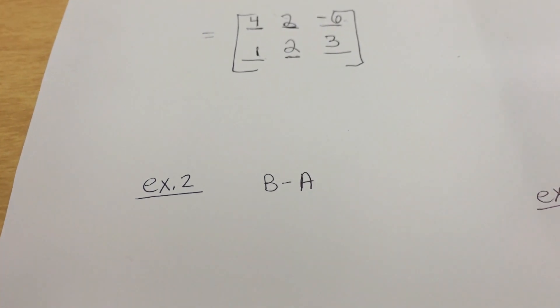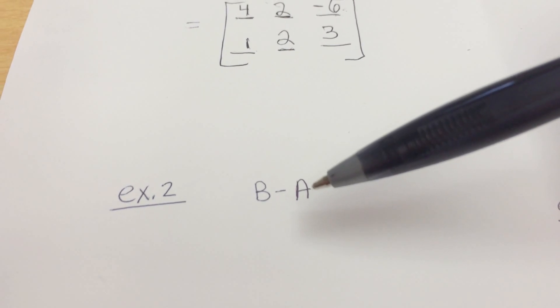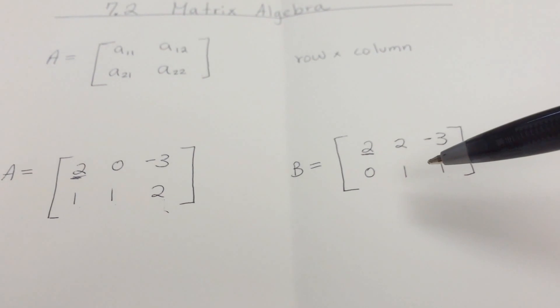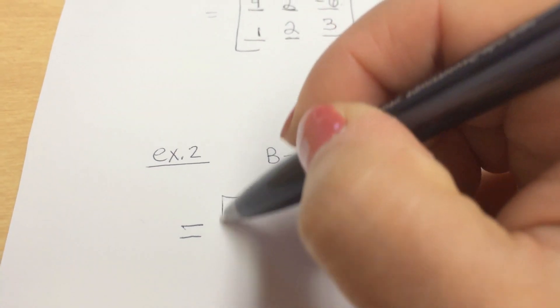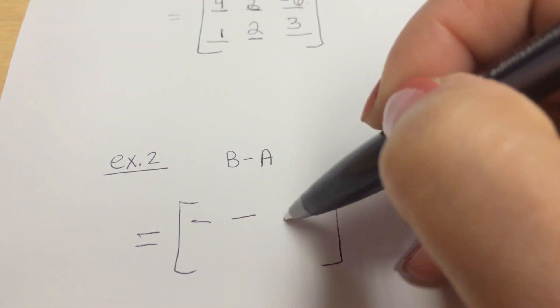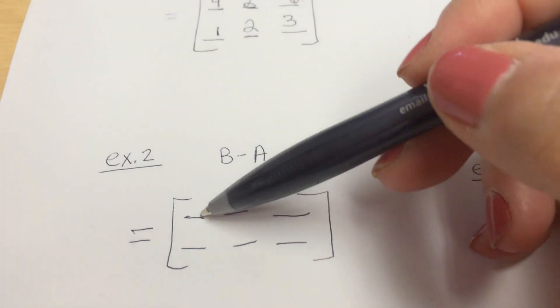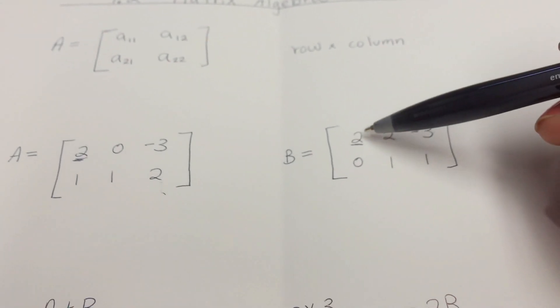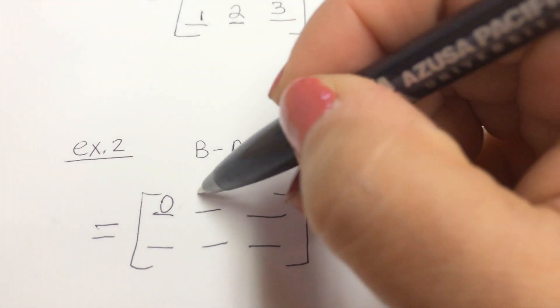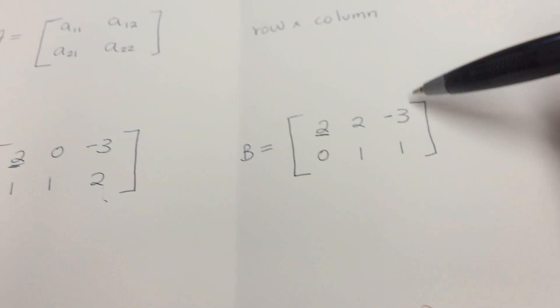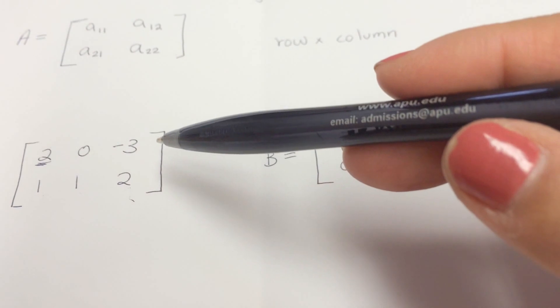Example two: subtract matrix B from matrix A. Be careful — A minus B does not give the same answer as B minus A. The result matrix will have two rows and three columns. First row, first column: two minus two equals zero. First row, second column: two minus zero equals two. First row, third column: negative three minus negative three becomes zero, since the negatives cancel.